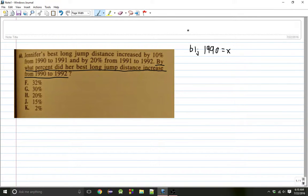So for the BLJ for 1991, for the best long jump for 1991, we're going to denote that as Y. And for the best long jump of 1992, we're going to denote that as Z.